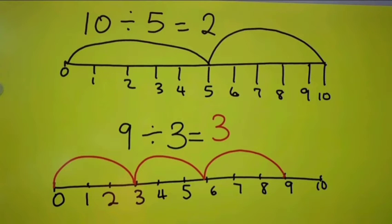In all we have made two jumps, so 10 divided by 5 equals 2. And same as 9 divided by 3 equals 3. We make our number line again, start jumping from 9, so our answer is 3.